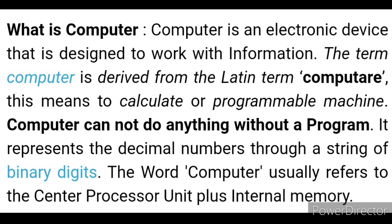Numbers like 2, 3, and 4 are formed as a combination of 0s and 1s, because a computer understands only two bits: 0 or 1.